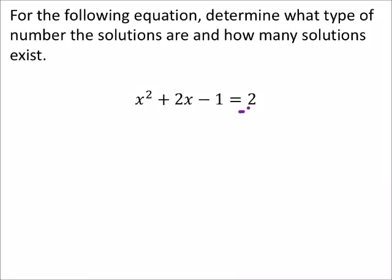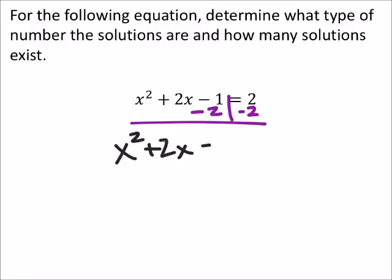On this one, we're going to have to subtract 2 from both sides so that this is in a quadratic equation form. So we got x squared plus 2x minus 3 equals 0.